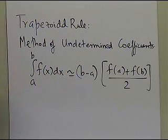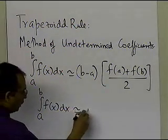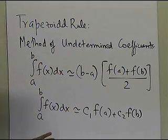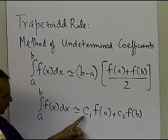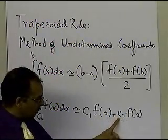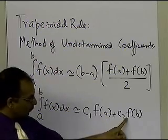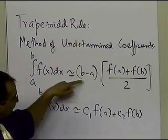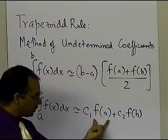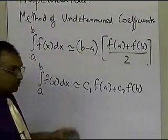What the method of undetermined coefficients tells you is that we can derive a similar formula for the value of the integral using something like c1 times f(a) plus c2 times f(b). So you are giving some weight c1 to the value of the function at a, and some weight c2 to the value of the function at b, rather than interpreting it as the width times an average value.